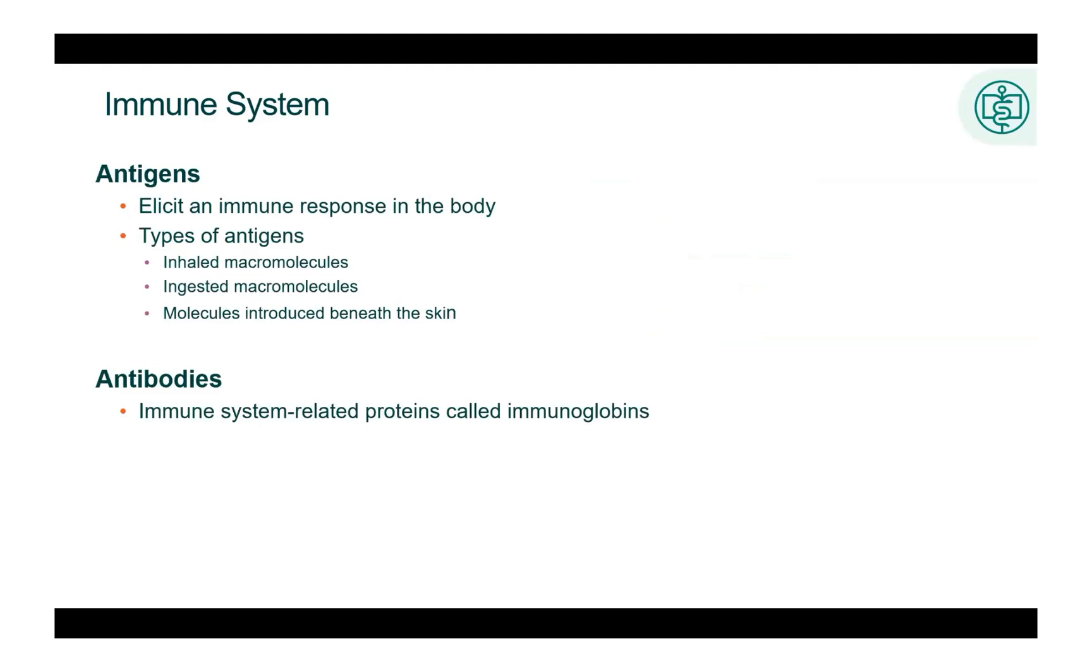Antigens elicit an immune response in the body. Antigens that enter the body from the environment include inhaled macromolecules, for example, proteins on cat hairs that can trigger an asthma attack, ingested macromolecules such as shellfish proteins that can trigger an allergic reaction or a peanut allergy, and molecules that are introduced beneath the skin such as a splinter or an injected vaccine.